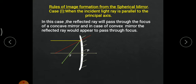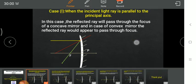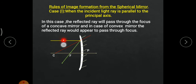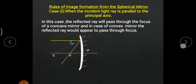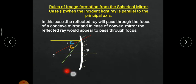Now if you draw a normal between the incident ray and reflected ray, this red line is the normal. This normal always passes through the center of curvature. Whenever incident and reflected light rays meet at the point of incidence, the normal drawn will always pass through the center of curvature. As per the law of reflection, the angle created between the incident ray and normal is the angle of incidence, and the angle between the reflected ray and normal is the angle of reflection. Angle of incidence always equals angle of reflection — angle i equals angle r.